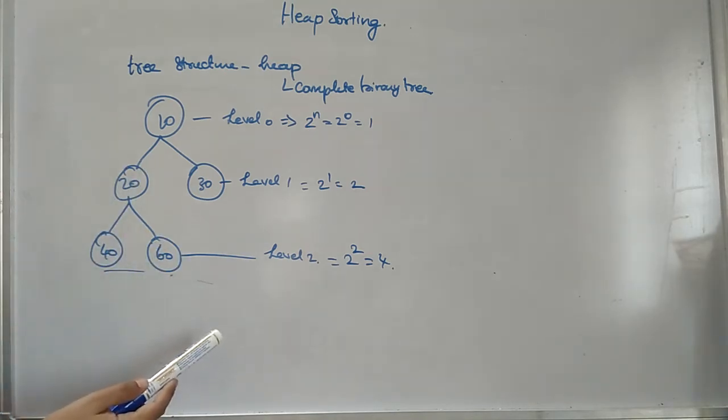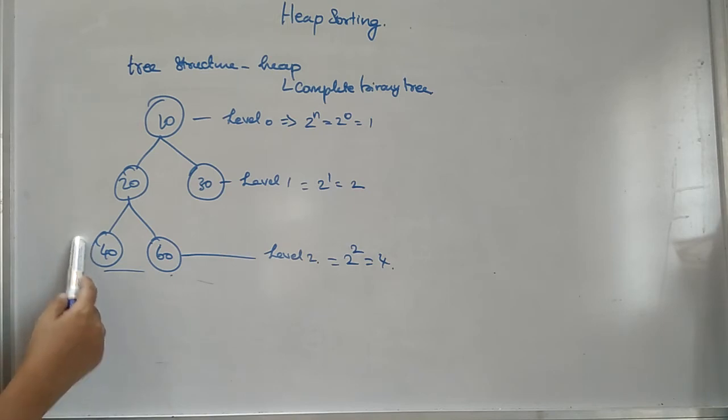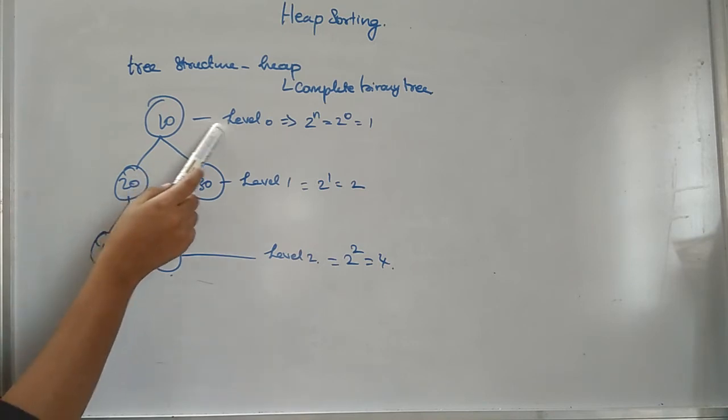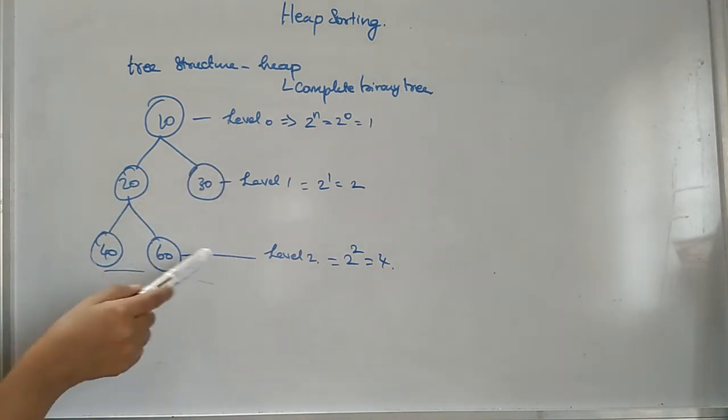Even if you are having the maximum number of nodes in the last level also, it will be considered a complete binary tree. But even though if the condition is not satisfied for the last level, we can say this is a complete binary tree because a complete binary tree should have the maximum number of nodes at each level except the last level.